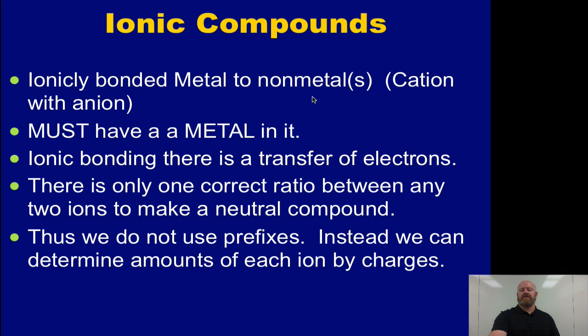Another way of looking at that is do you have a cation bonded with an anion? You're always going to have a metal written first, and then it's going to be followed by either one or more non-metals. Recall there is a transfer of electrons there. Unlike molecules where we have multiple different ratios, for ionic compounds, the ratio always has to be the same.